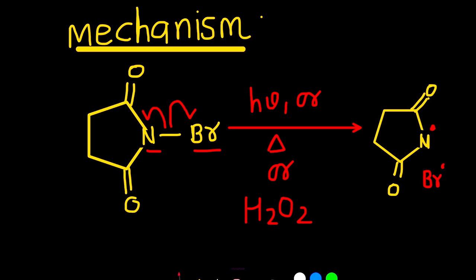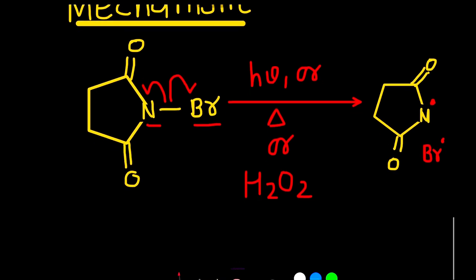Now, this is the initiation step in which the nitrogen and Br bond homolytically breaks in the presence of light. It will generate the bromine radical.